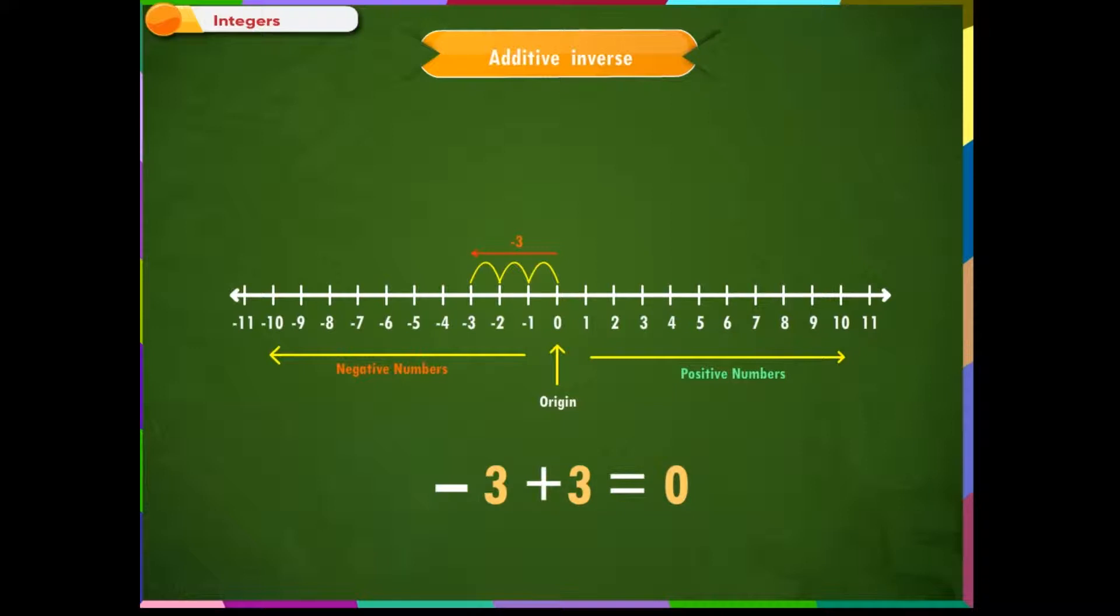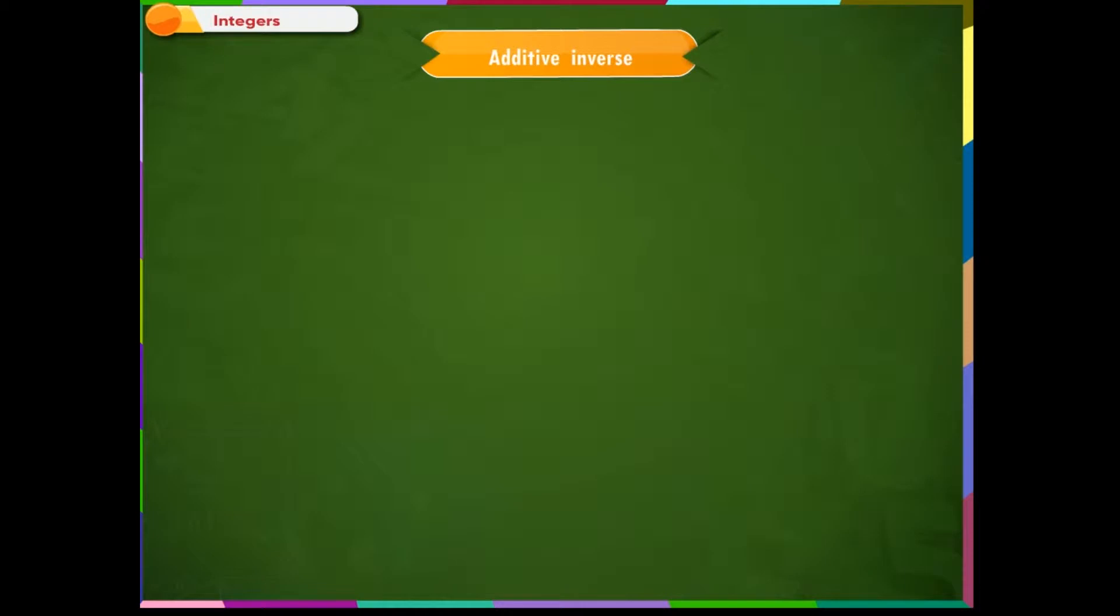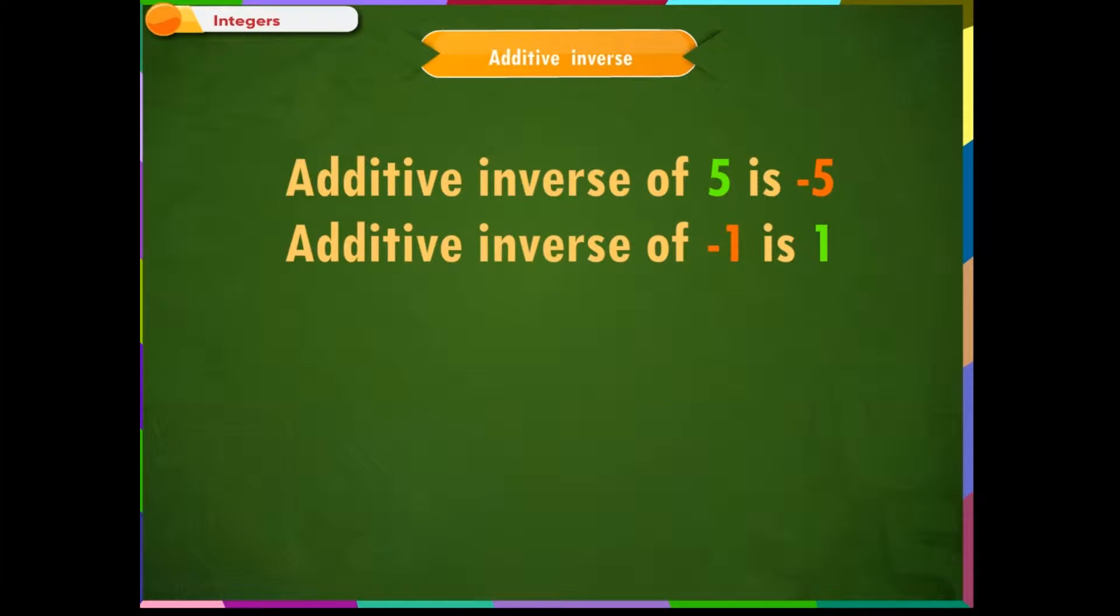So, we found that when we add two opposites, we always reach at 0. Thus, the additive opposite or additive inverse of 5 is minus 5. Additive inverse of minus 1 is 1 and so on.